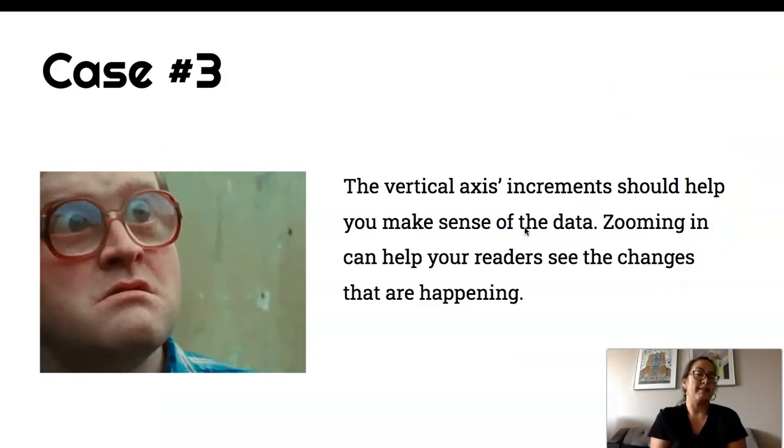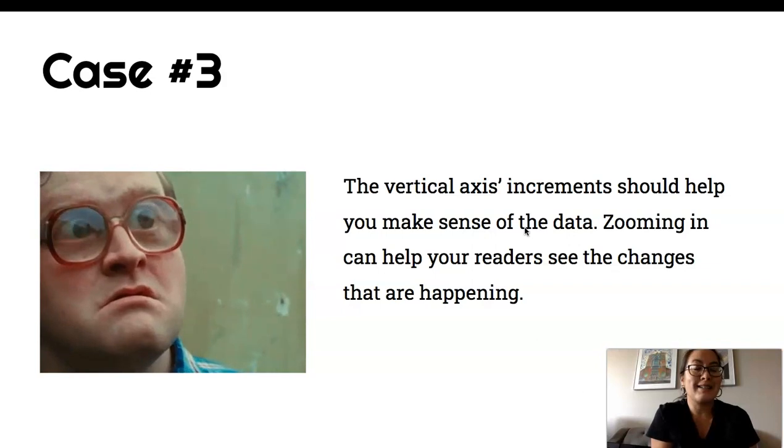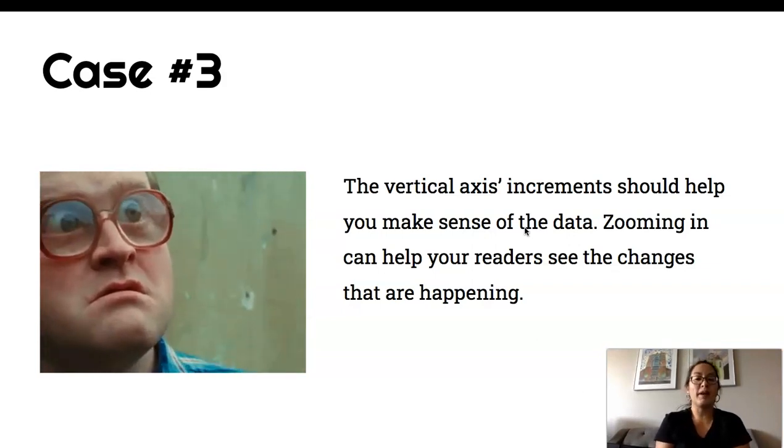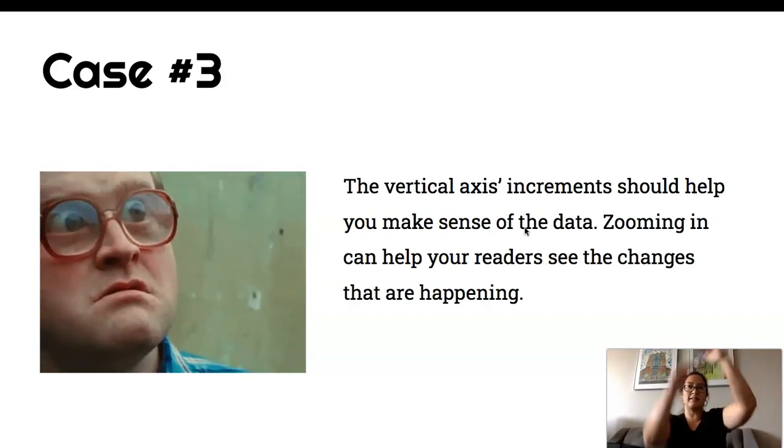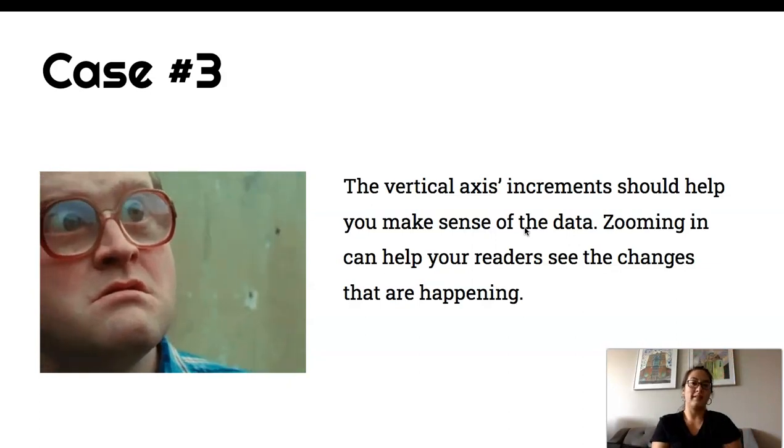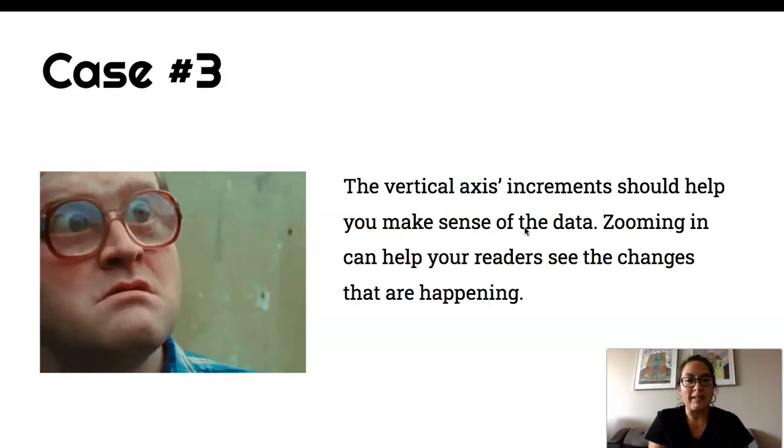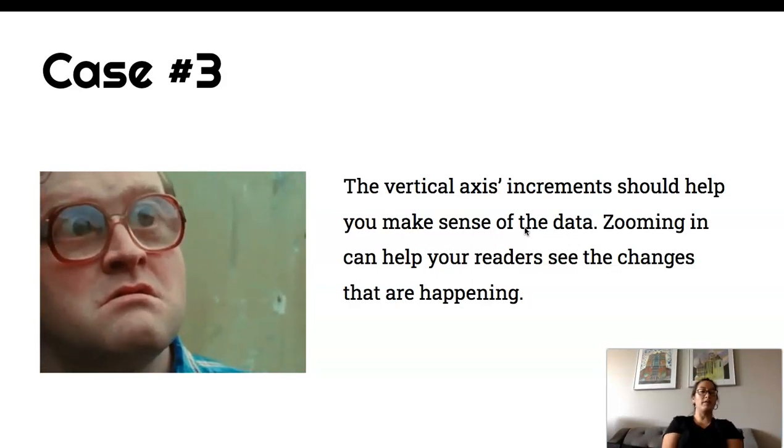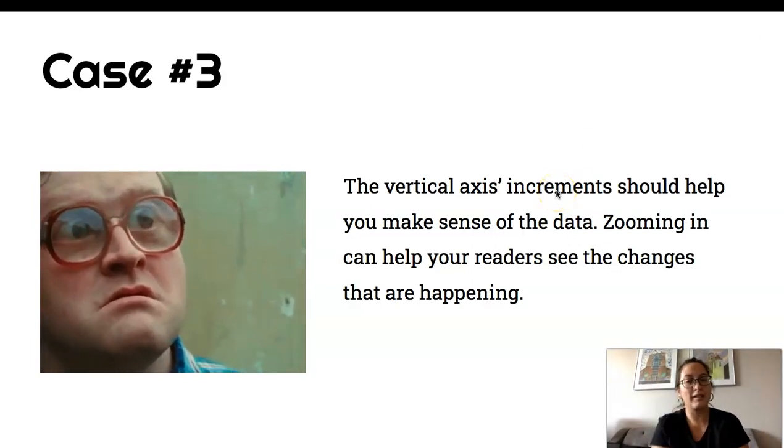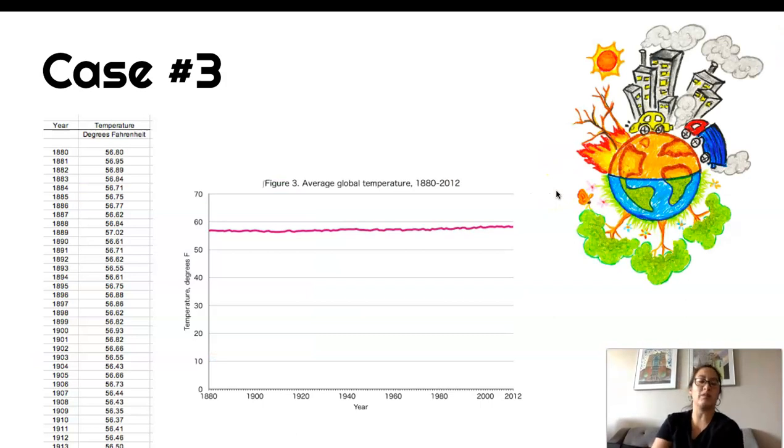But what I want to posit is that the context is very important. So a graph's vertical increments, that's the distance between the tick marks on the vertical side of the graph, should help you make sense of the data. If you zoom in or zoom out that changes what the graph looks like and you need to make sure that you pick these increments, the spacing, to make sense.